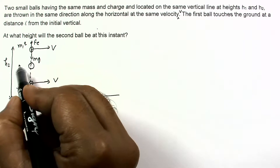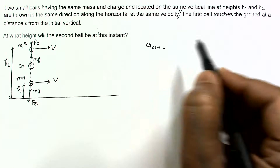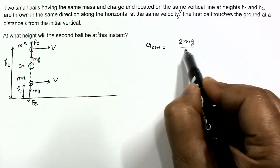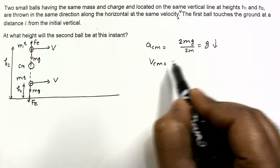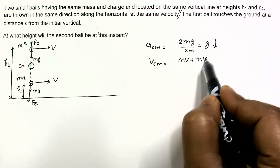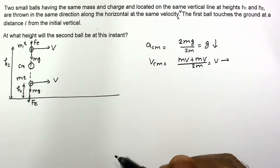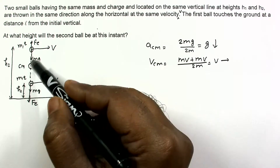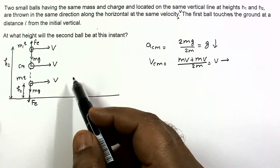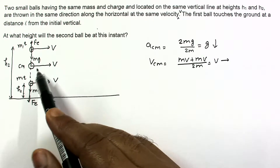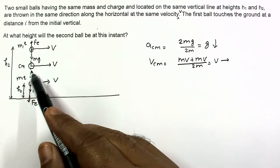Since the masses are equal, the center of mass is at the midpoint of the two balls. The net force on the system is 2mg and the total mass is 2m, so the acceleration of the center of mass is g downwards. Both balls have initial velocity v in the horizontal direction, so the center of mass moves just under gravity with initial velocity v along the horizontal and acceleration g vertically downwards.